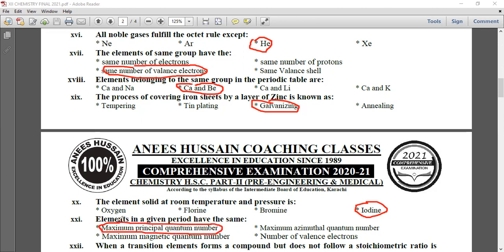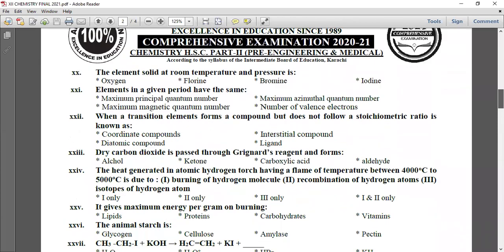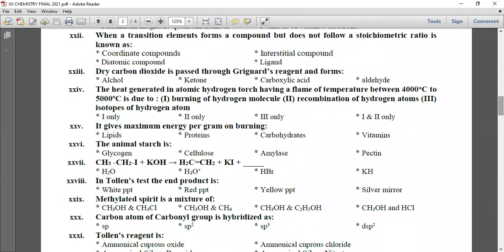When a transition element forms a compound but does not follow a stoichiometric ratio, such a compound is called an interstitial compound. In chapter number five, we call them interstitial compounds, and in chapter two we also study them as interstitial hydrides or metallic hydrides.